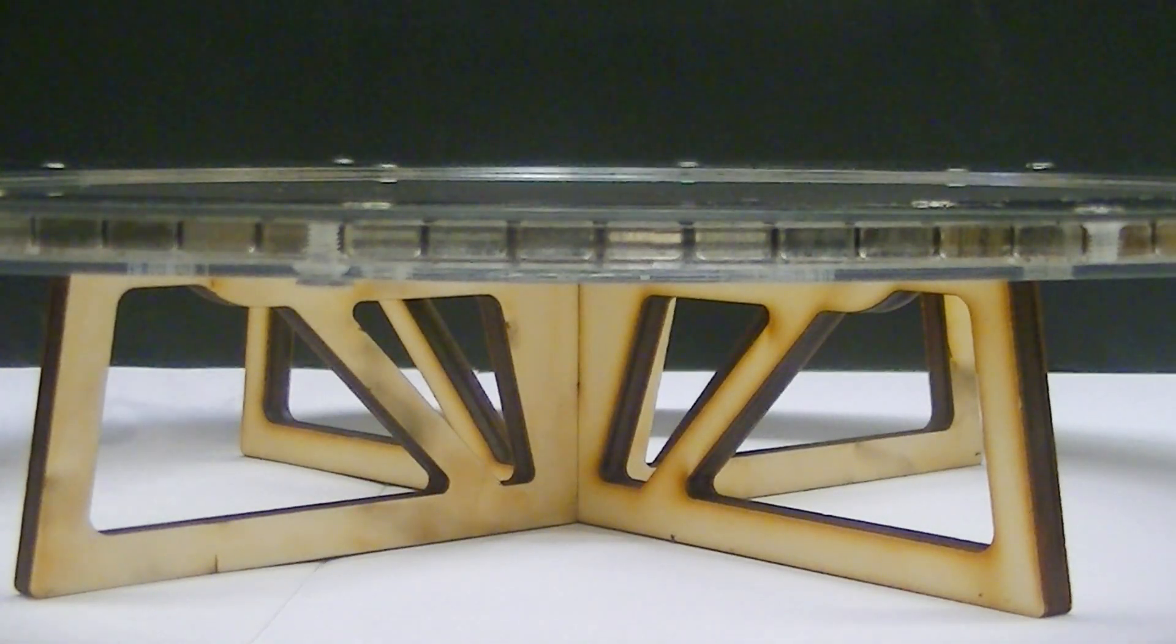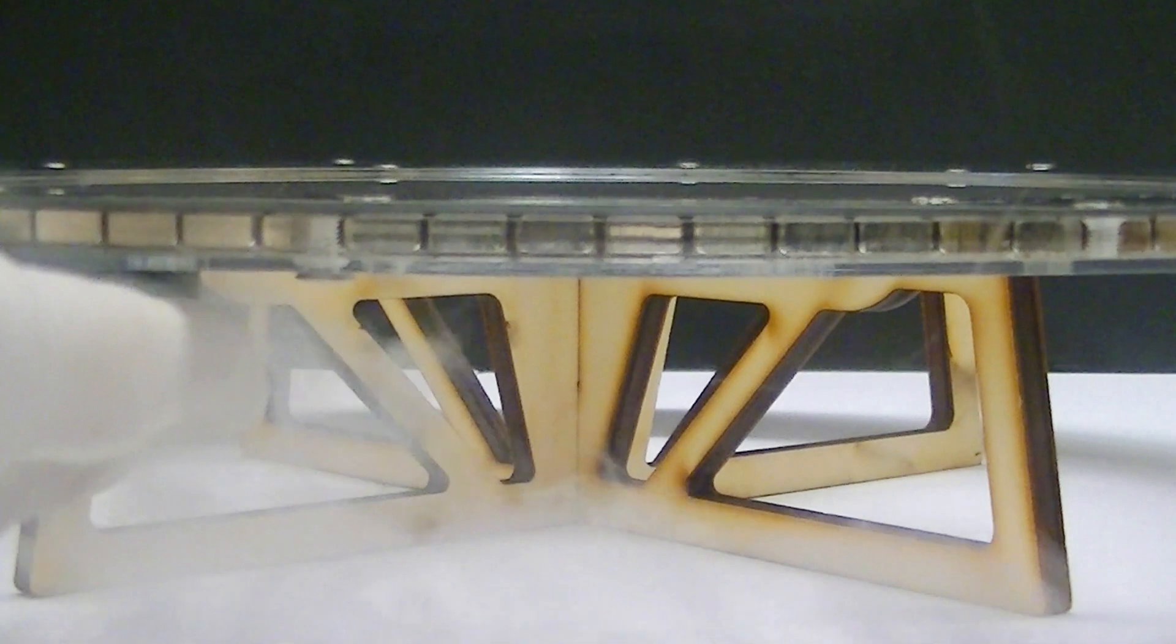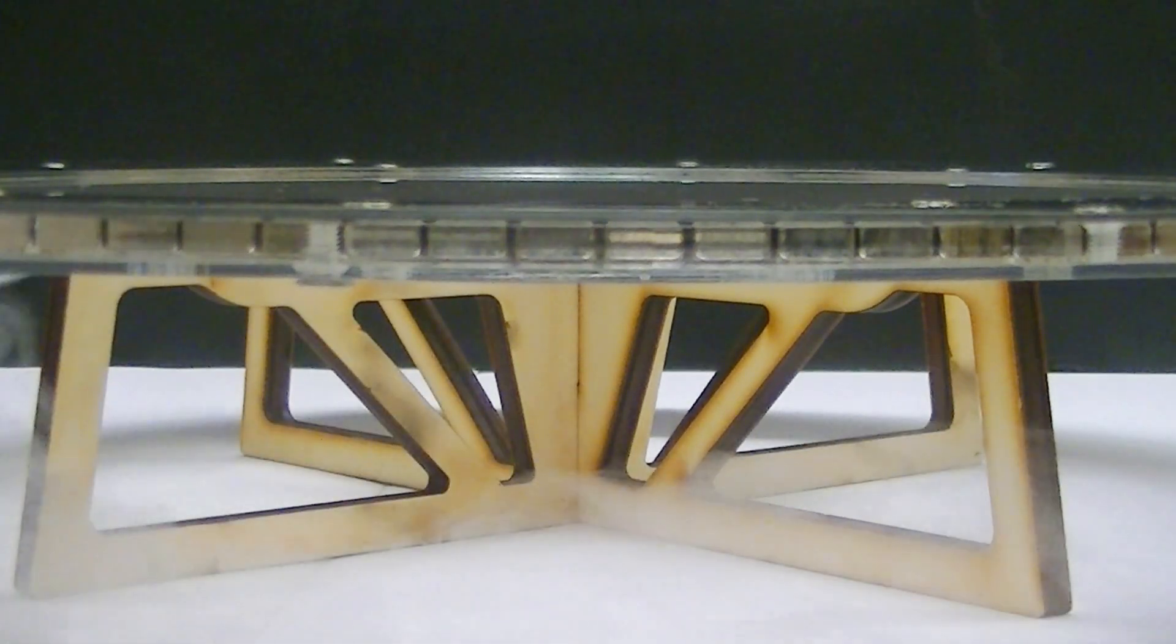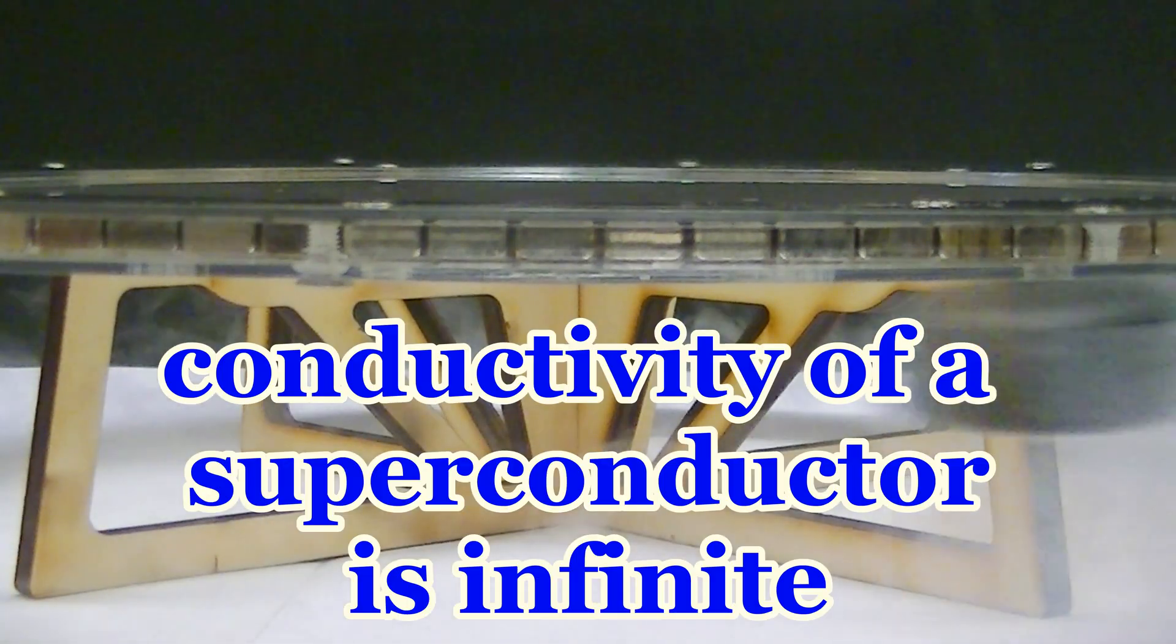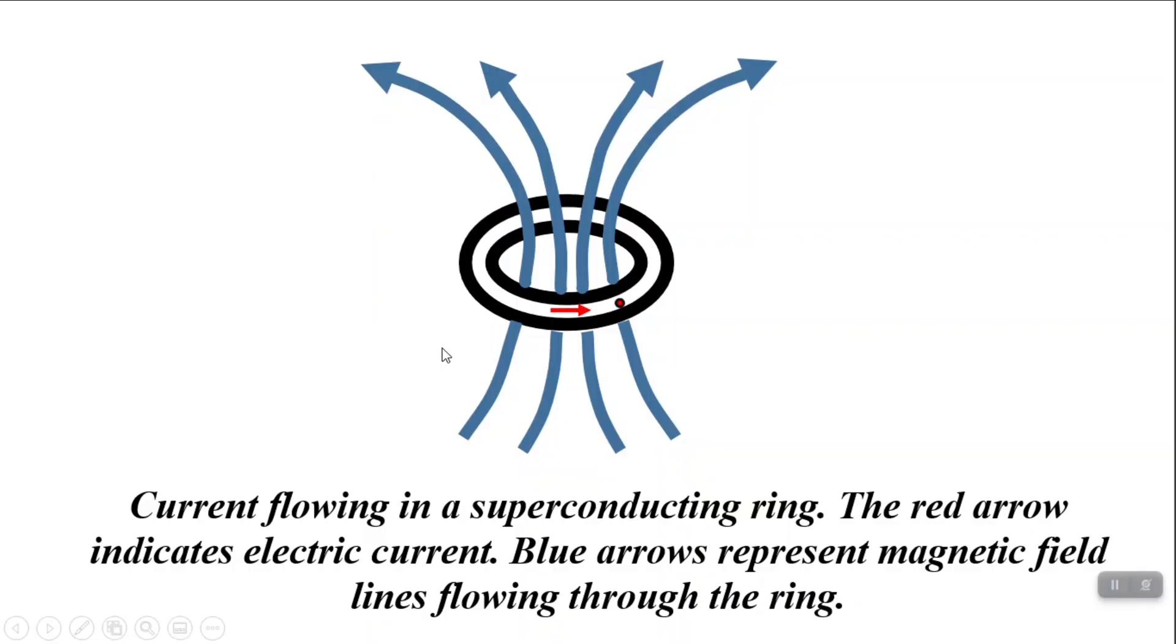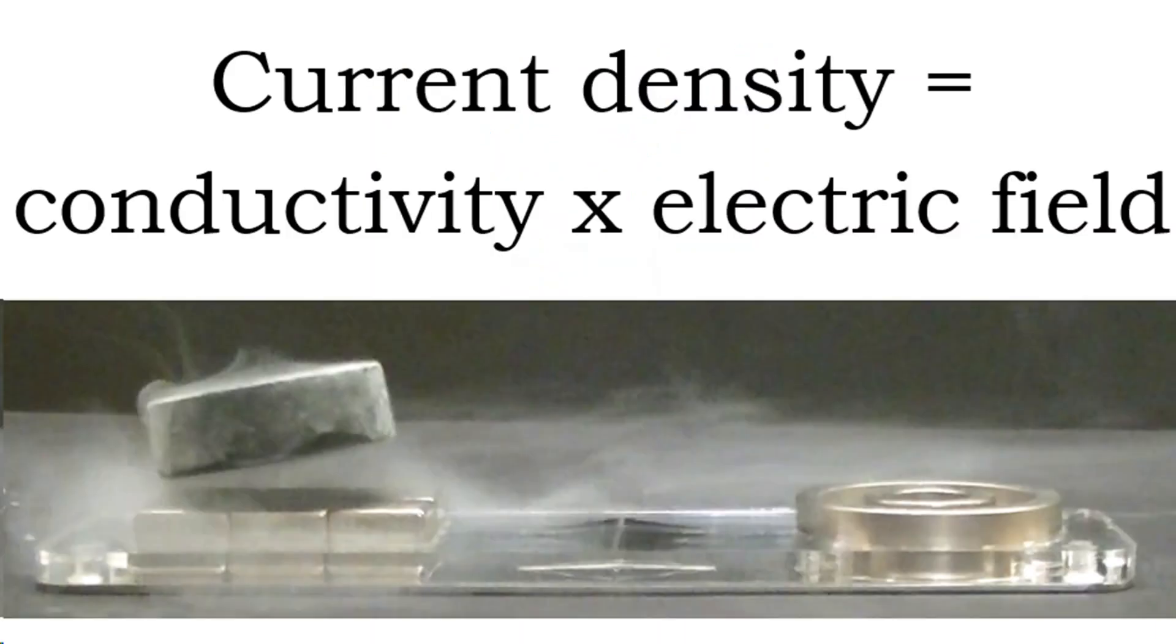Electric current flows without resistance through a superconductor. Another way of saying this is that the conductivity of a superconductor is infinite. Let's imagine electric current flowing through a superconducting ring. The electric current density flowing through the ring can be calculated as the current density is the conductivity times the electric field. According to this equation, if the conductivity is infinite, then the current density must also be infinite.